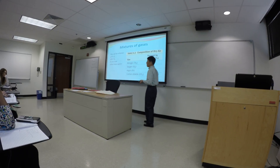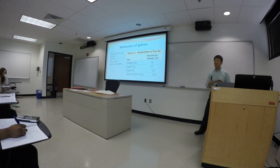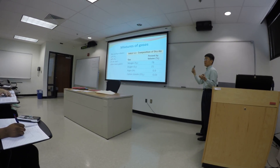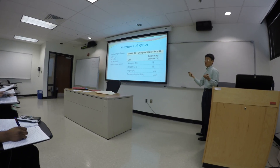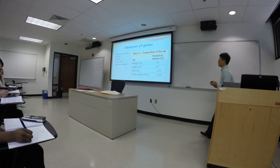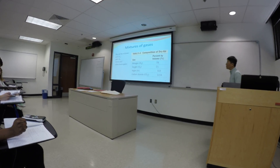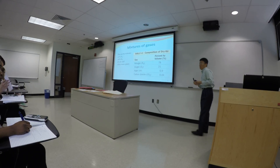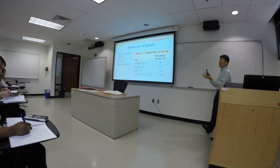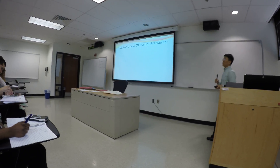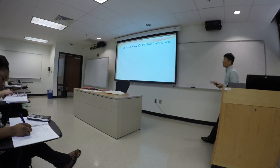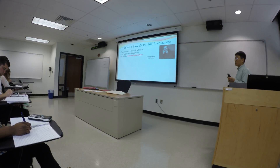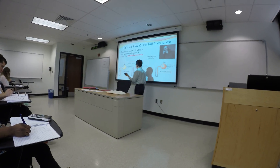Dry air is a perfect example of a gas mixture: 21% oxygen by volume means 0.21 liters of oxygen per liter of air, 0.78 liters is nitrogen, and 1% is a trace amount of argon, carbon dioxide, and other gases. When we talk about air pressure, we're talking about the pressure generated by everything in this mixture. Dalton's Law of Partial Pressure states that the partial pressures of each component in a mixture add up to the total pressure.